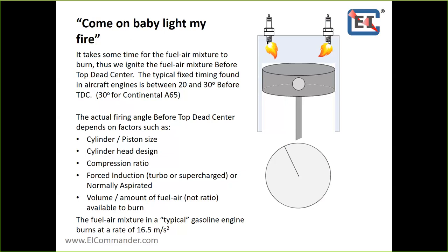A Continental A65 has very low compression, like 6-to-1. A standard parallel valve engine is about 8.5-to-1 compression, and the angle valve is about the same — I'd have to look it up. For a gasoline engine with a typical perfect fuel-air ratio, the rate it burns is 16.5 meters per second. The fuel-air mixture doesn't explode in the cylinder — it burns.